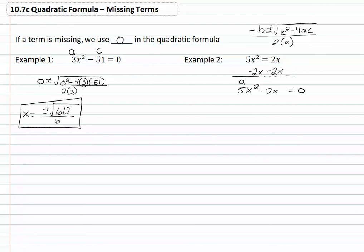Our a is our five, our b is negative two, and we are missing our c, so we'll use a zero in place of our c.